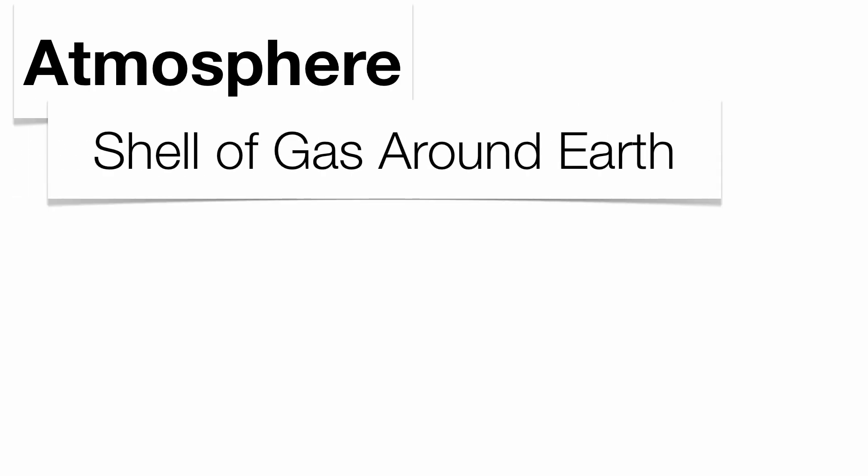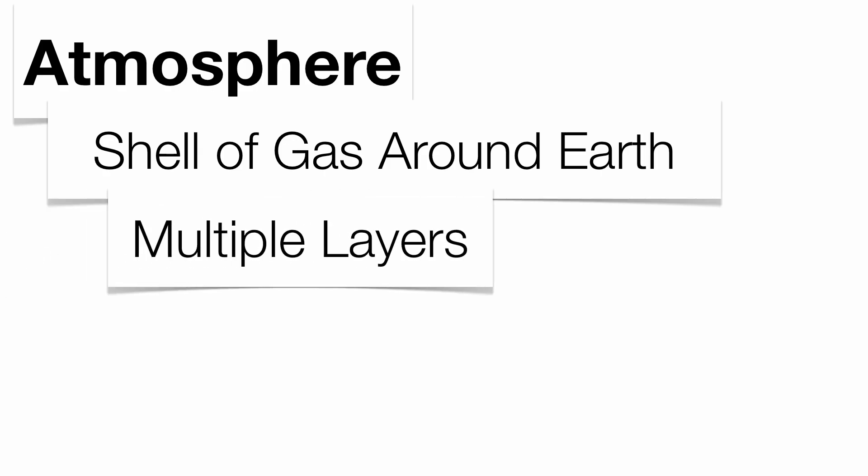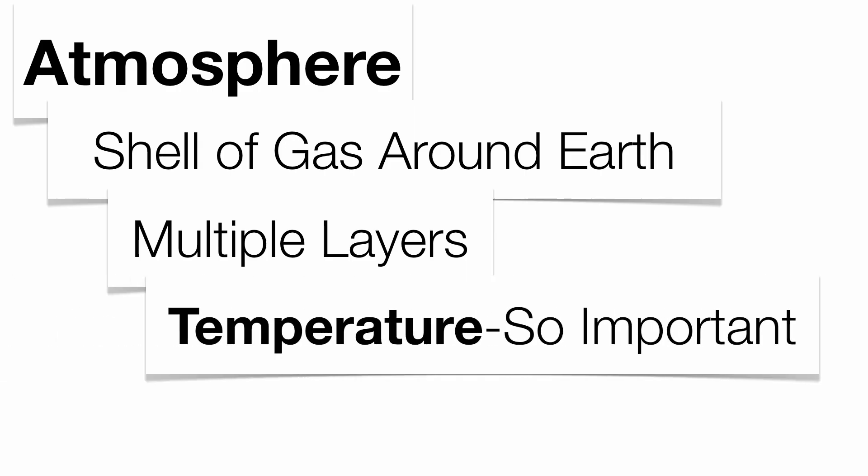Our atmosphere today is very important to us because it's essential for life to exist. Without the atmosphere, there's no oxygen and there's no life on the planet. We know that our atmosphere is broken up into multiple layers, and we'll talk about the four basic layers of the atmosphere. Temperature is an extremely important concept when going from one layer to the next.